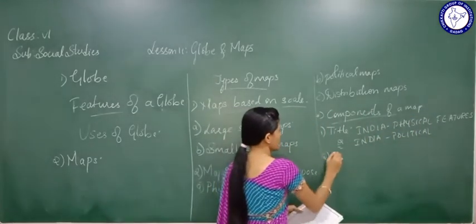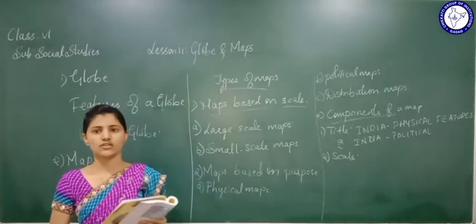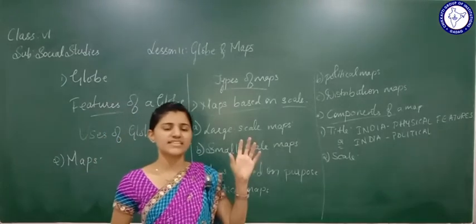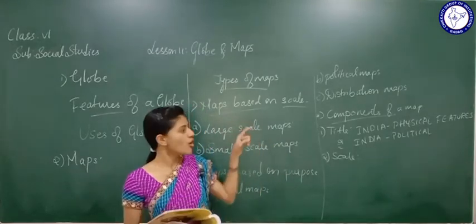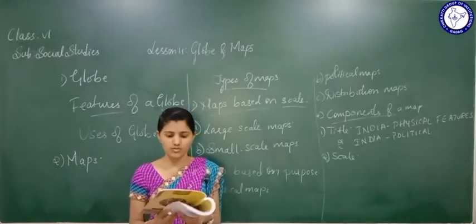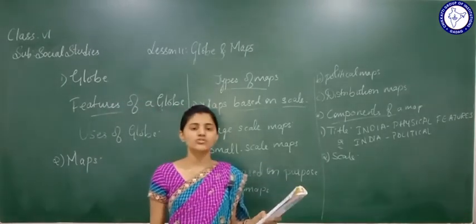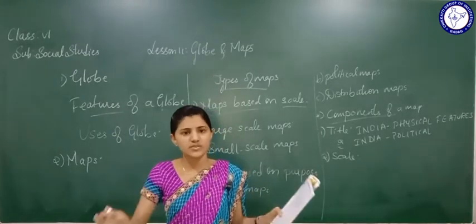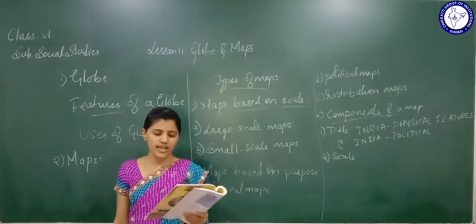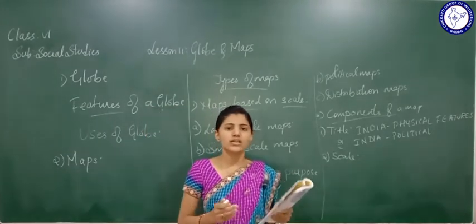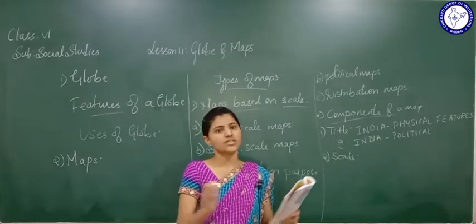Next comes the scale. A scale is a ratio between the distance on the map and the corresponding distance on the ground. We cannot exactly represent the distance of the ground on the map, so the scale shows us the ratio. It helps us to know the distance between two places. The distance between two points on the map is closer than the actual distance on the ground, because we have taken a ratio.